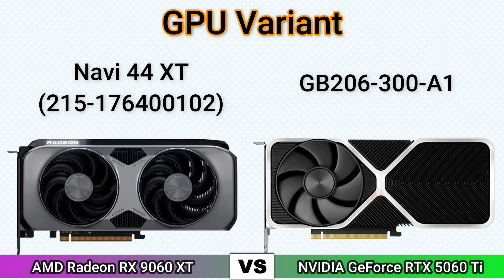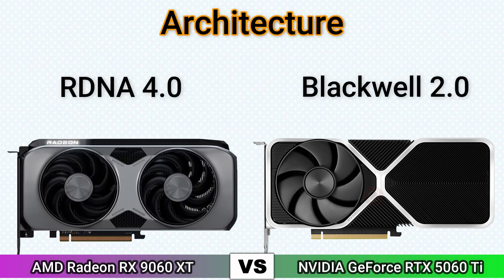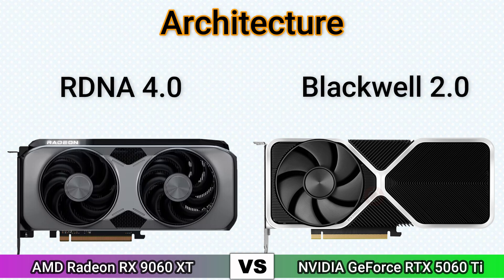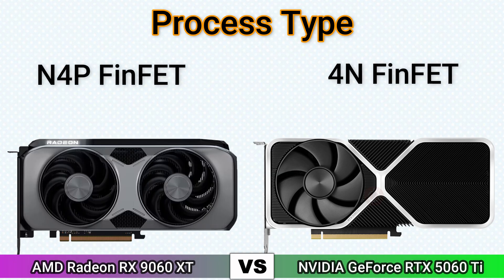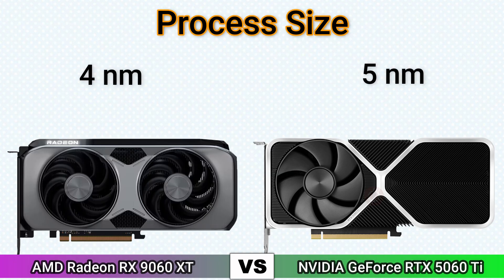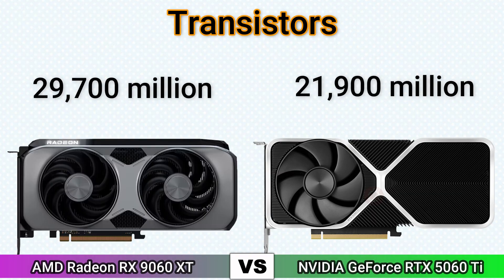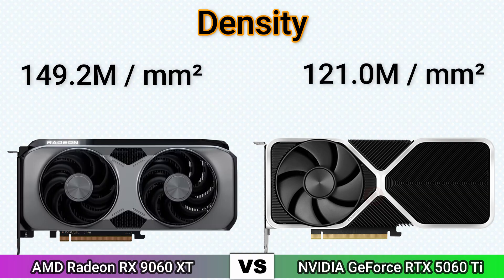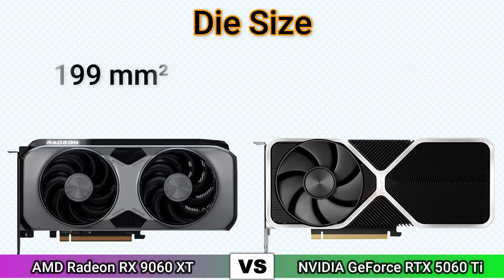GPU variant, architecture, process type, process size, transistors, density, die size.